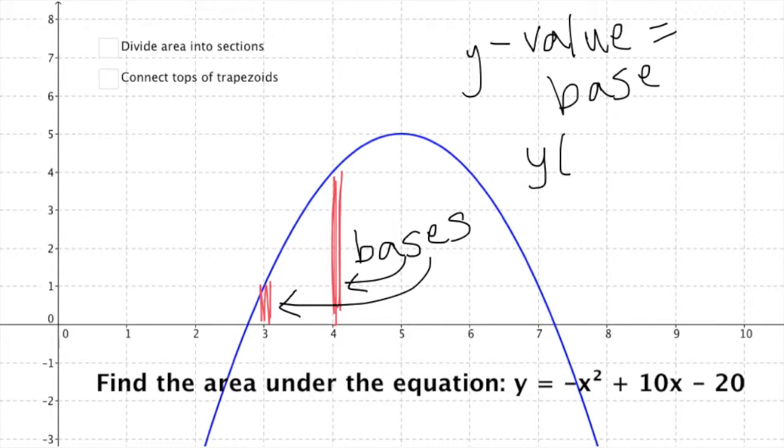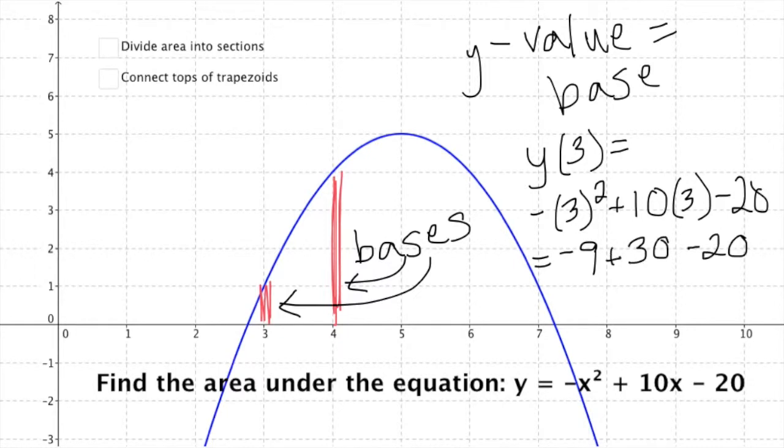So let's say we want to define the y value when x is 3. That's just a simple substitution, negative 3 squared plus 10 times 3 minus 20. And simplifying that out, we get negative 9 plus 30 minus 20, which all simplifies out to just be positive 1, and that makes sense because that's the height of that first red base that you see there.